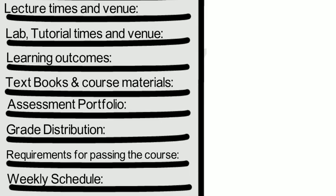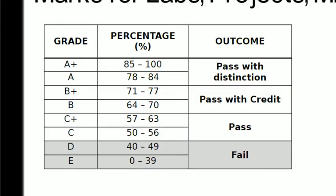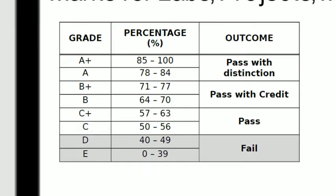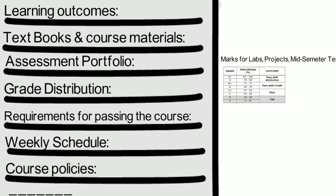For example, labs, projects, mid-semester test, etc. The grade distribution and requirements for passing the course — for example, achieving at least 40% in the final exam, attaining a minimum of 60% attendance in labs, etc. Please note you have to present six sheets if unable to attend.